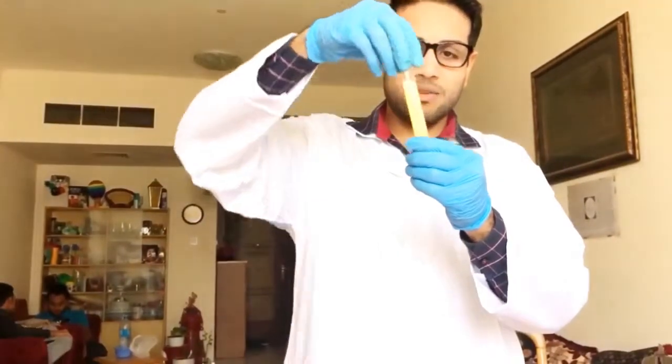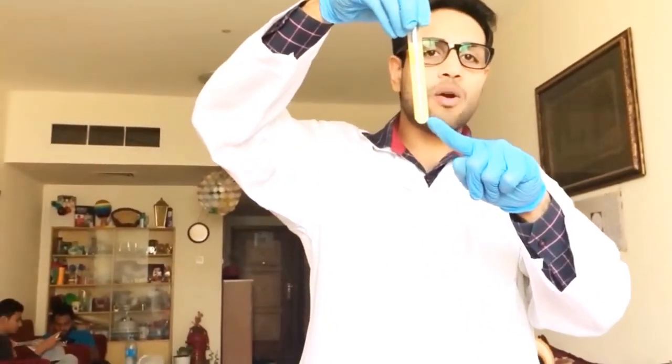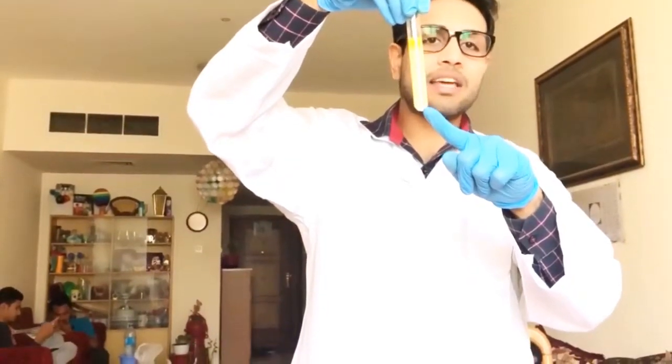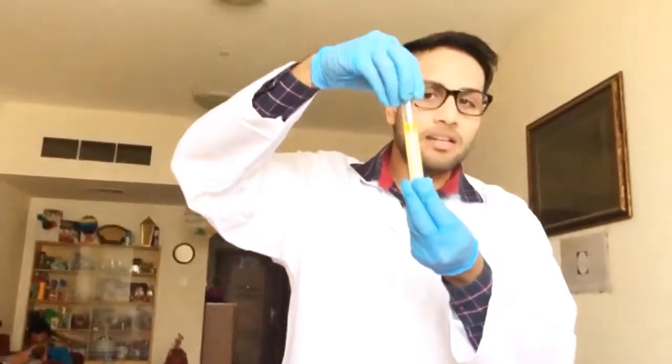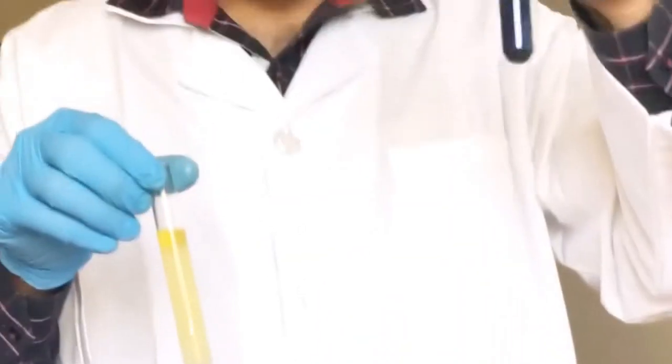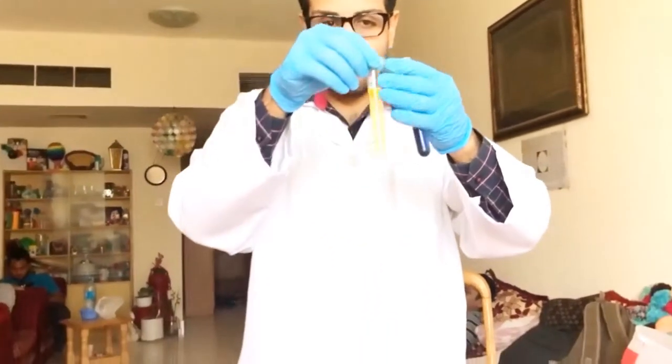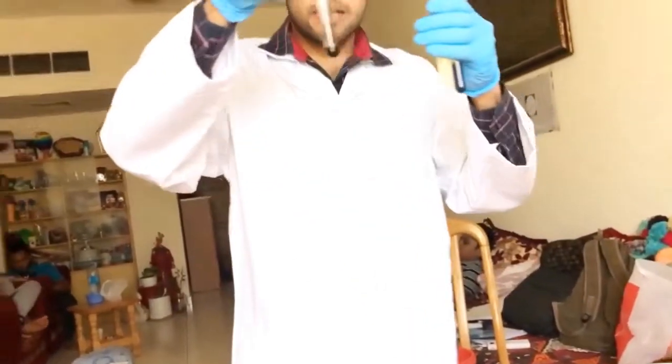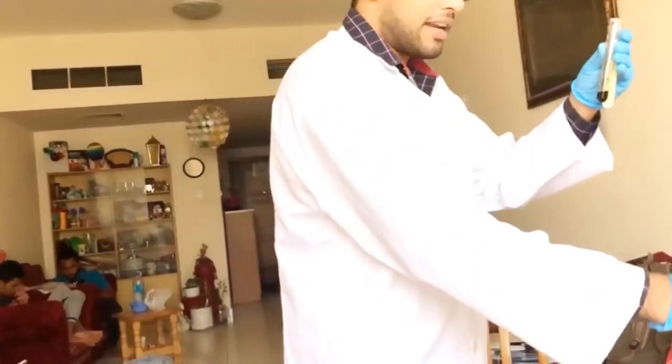If anything contains fats it will change into white or cloudy. As you can see here, it has changed milky or cloudy. This is the proof that fats are present in our oil. These are the four tests that we have performed: the lilac purple which changes with time, the fats test, starch iodine test, and finally our sugar test which turned into brick red.